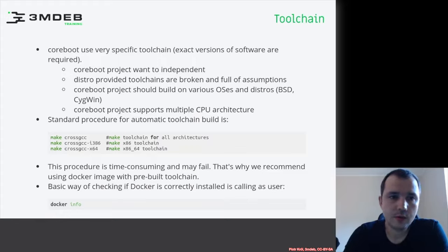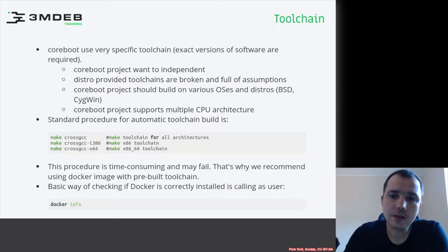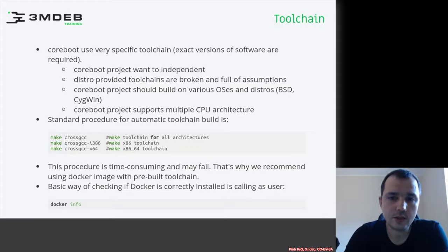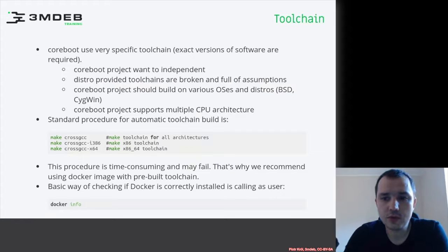You may ask: in my distribution I can install GCC, GDB, and libc, so why do I need another toolchain? This is because, first of all, the coreboot project wants to be independent. It has happened many times in the past that various distributions provide broken or incompatible toolchains. People who create toolchains for general-purpose distributions make a lot of assumptions about how the toolchain will be used, and they typically do not consider open source firmware development as a main use case.